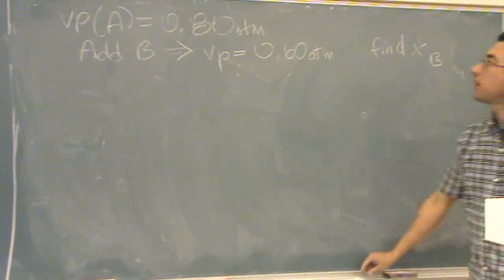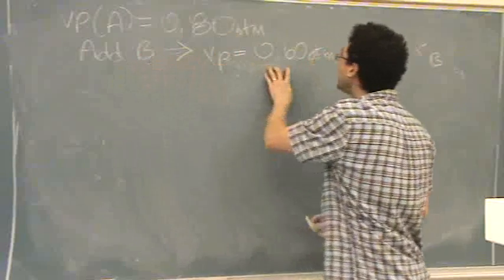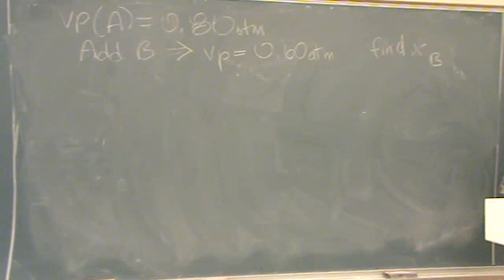You've got vapor pressure of only A, then you add B, you have a new vapor pressure that's dropped. You want to find the mole fraction of B.